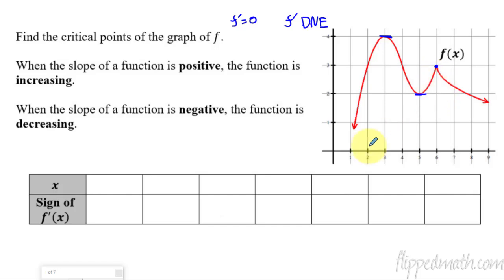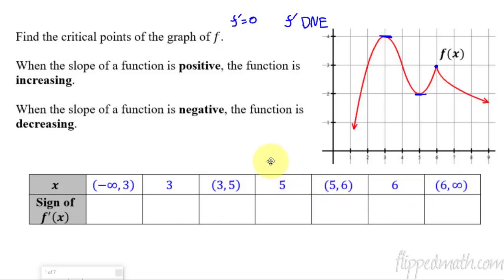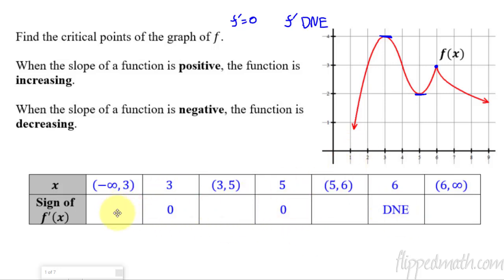So let's label those things on our little table here. I gave myself some space in between these because in these intervals — before 3, in between 3 and 5, in between 5 and 6, and then from 6 to infinity — the function is either going to be increasing or decreasing. Right at these critical points, the derivative was zero here, zero here, and did not exist here. So in between them, it's either going to be going up or down.